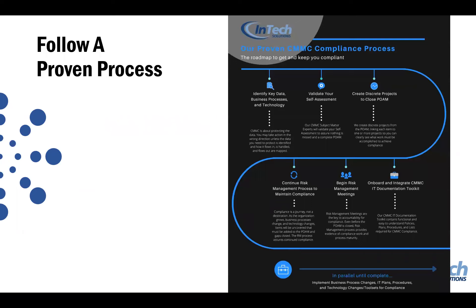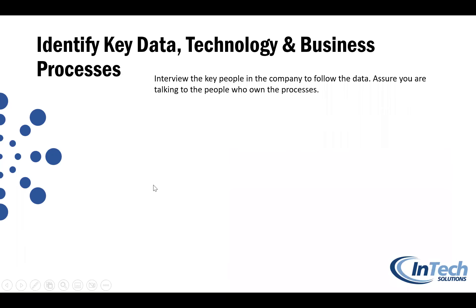Follow a proven process. We always start by identifying key data, business processes, and technology — we need to know this first to assess the right things in the gap assessment and identify a very detailed, high-confidence POA&M. Then we group everything into discrete projects, implement the documentation and compliance program, and conduct our compliance activities and reporting through what we call risk management meetings.